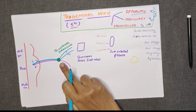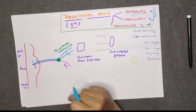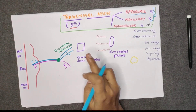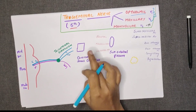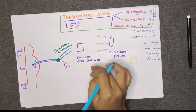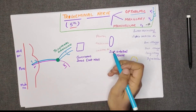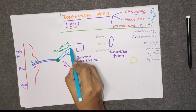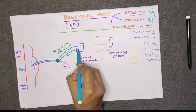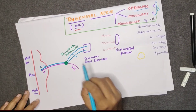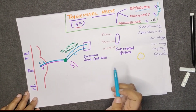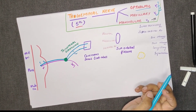In the mandibular and maxillary overview, we will see that in V1 and V2 — that is, the ophthalmic and maxillary nerves — both pass through the lateral wall of the cavernous sinus.